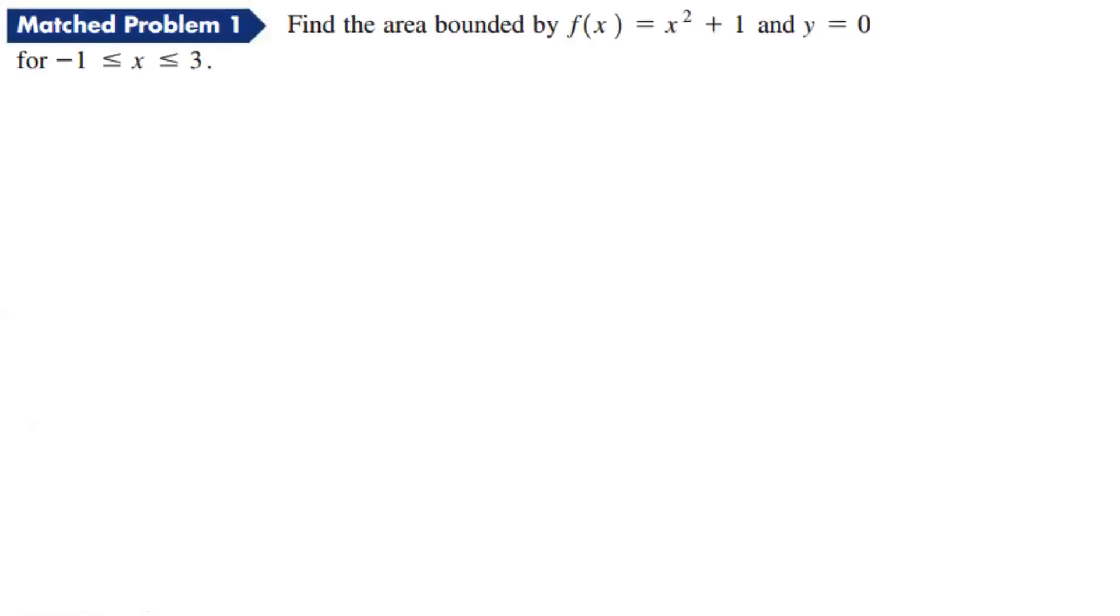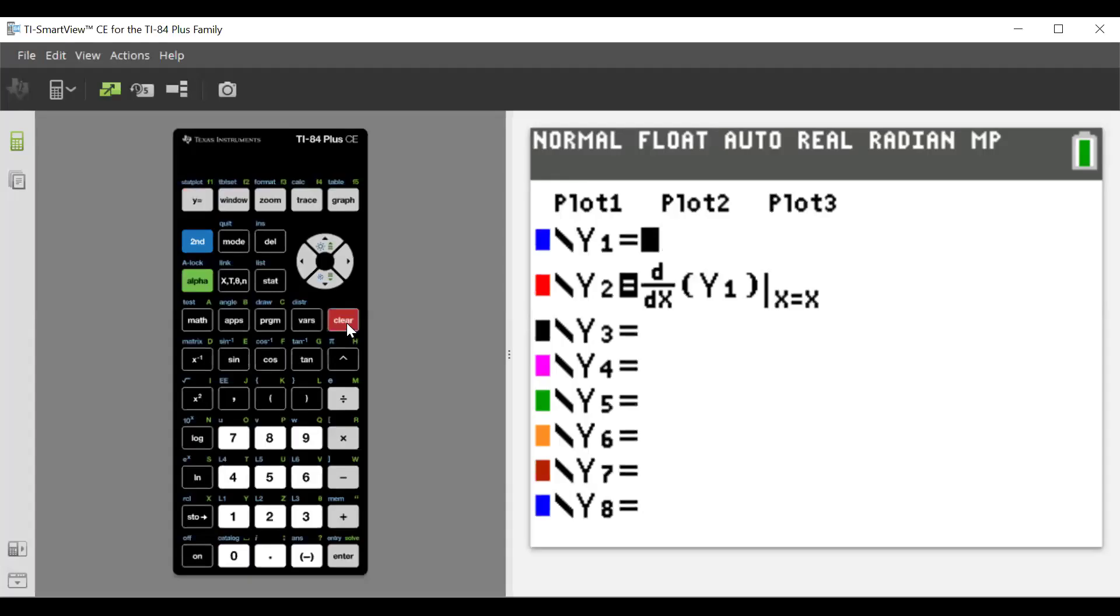Here we find the area bounded by f(x) = x² + 1 and y = 0 from -1 to 3. One thing we should probably do on all these cases, if we don't know what it looks like, is plot these functions. So let's plot this one.